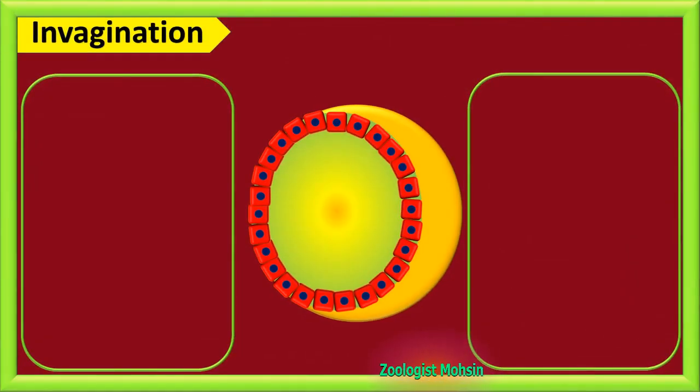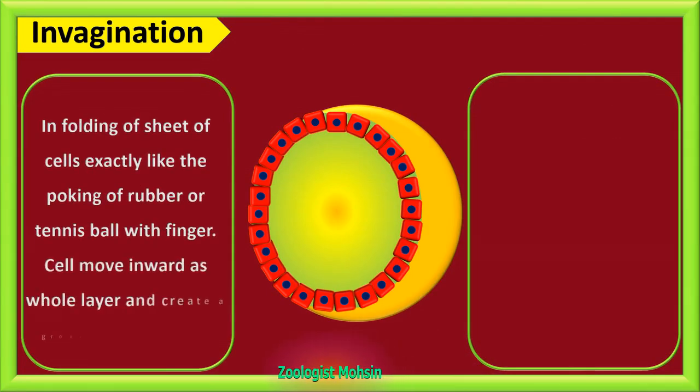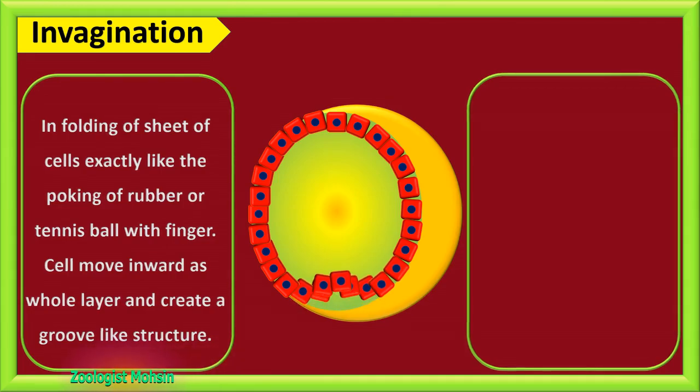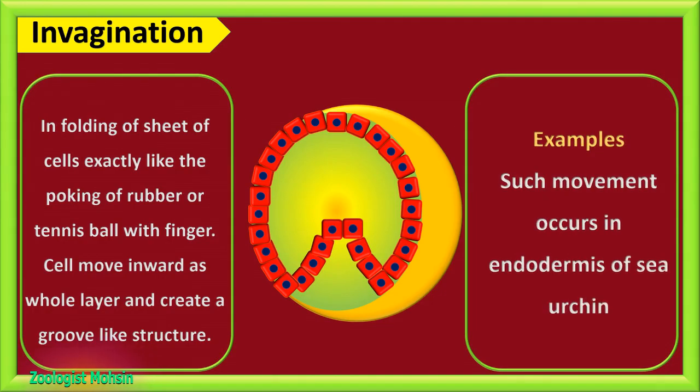Let's start. Invagination: infolding of sheet of cells, exactly like the poking of a rubber or tennis ball with finger. Cells move inward as a whole layer and create a groove-like structure, just like this.